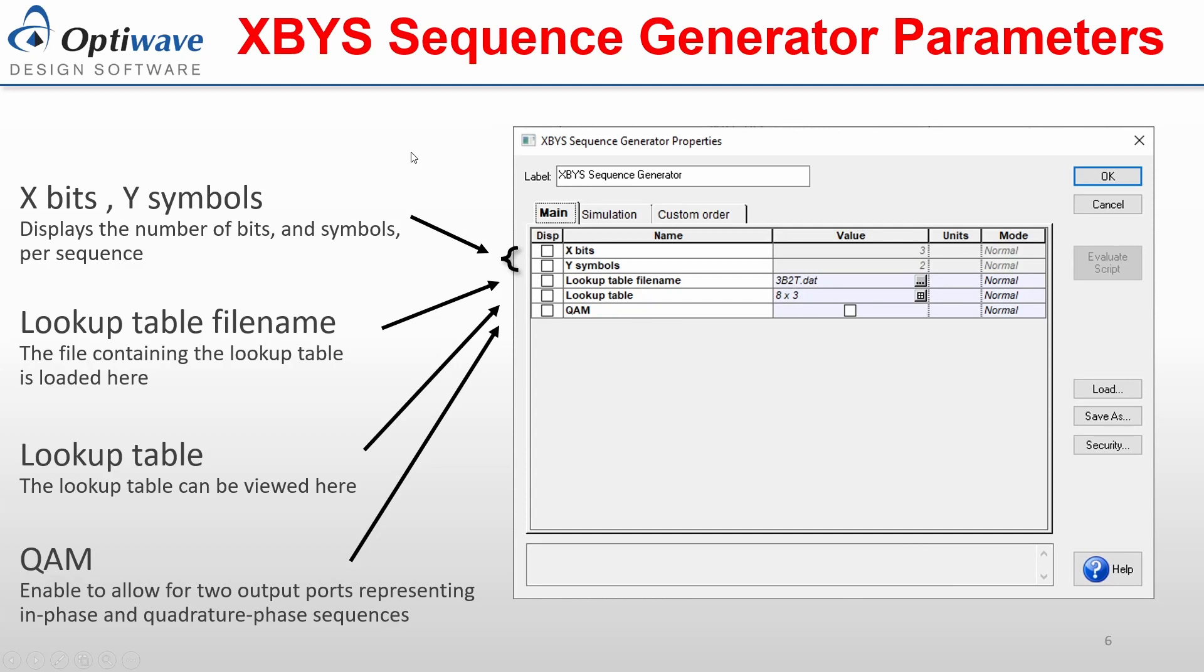The XBYS sequence generator parameters are displayed in the window on the right. The parameters X bits and Y symbols are automatically calculated for the current format and do not require user input.